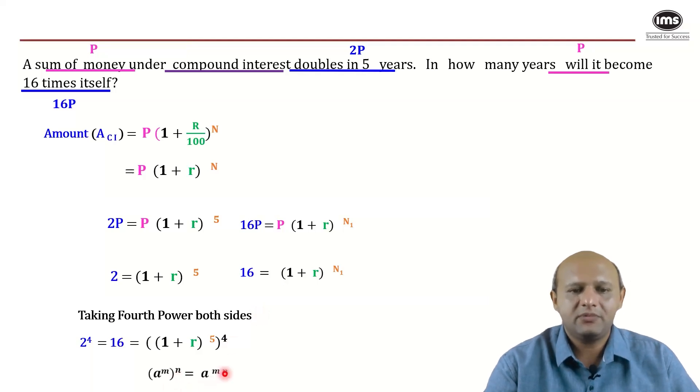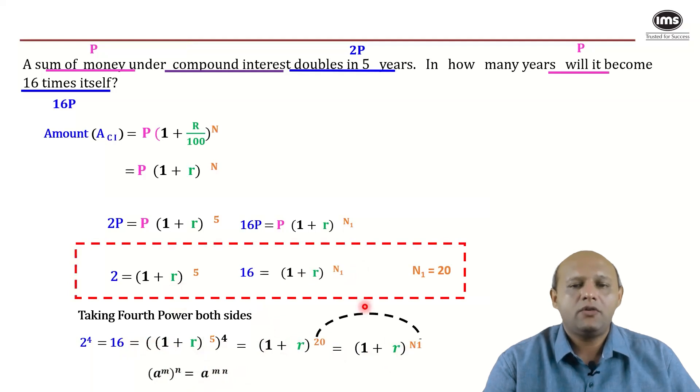Which law of indices is applicable here? a raised to m whole raised to n would be a raised to mn - that's the law applicable. Now essentially, 16 is in turn equal to (1 + r) raised to 20, which is nothing but (1 + r) raised to n1. So therefore, what is the value of n1? It is 20. So how many years will it take? 20 years.